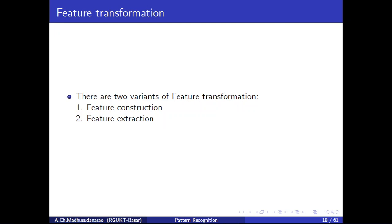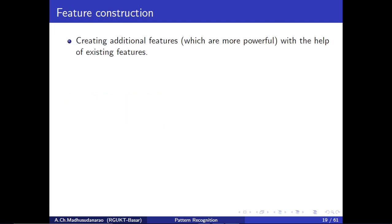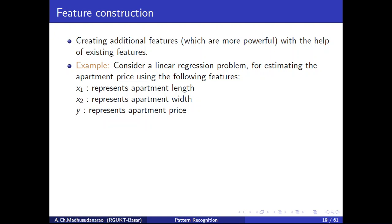There are two variants of feature transformation: number one, feature construction, and number two, feature extraction. Feature construction is meant for creating additional features which are more powerful with the help of existing features. For example, consider a linear regression problem for estimating the apartment price using features x1 (apartment length), x2 (apartment width), and y (apartment price).